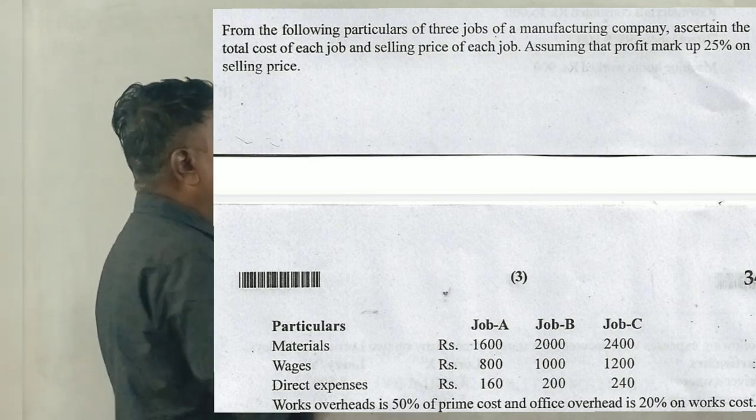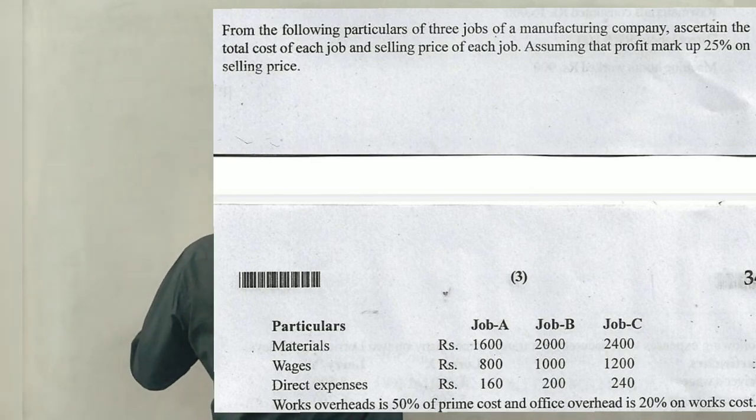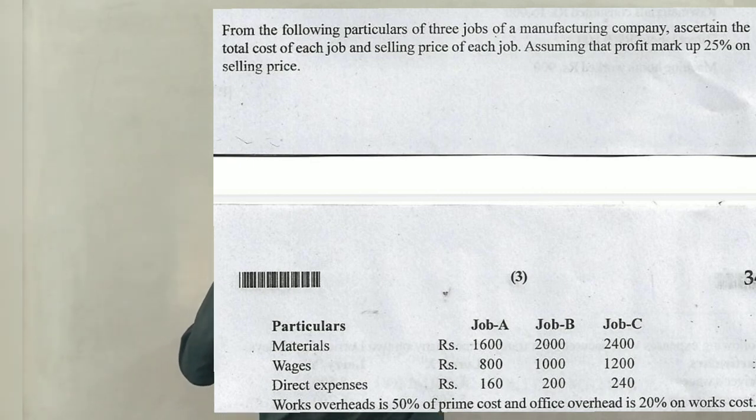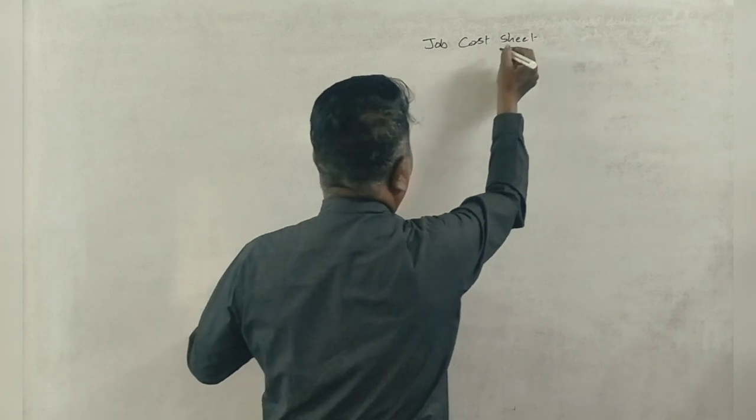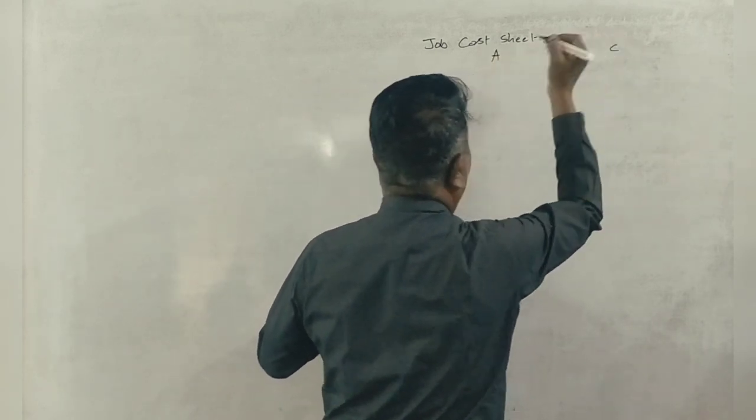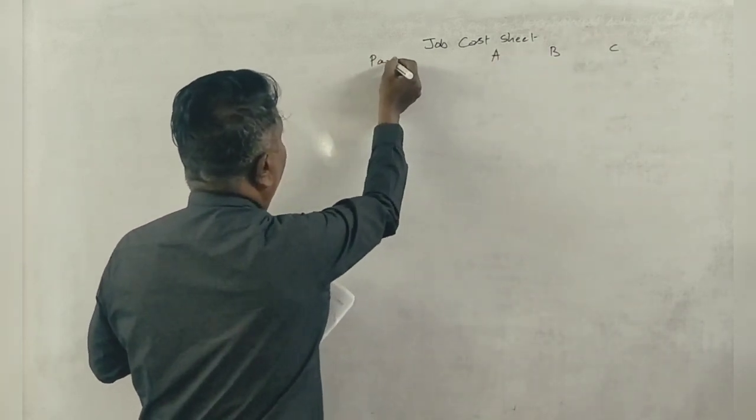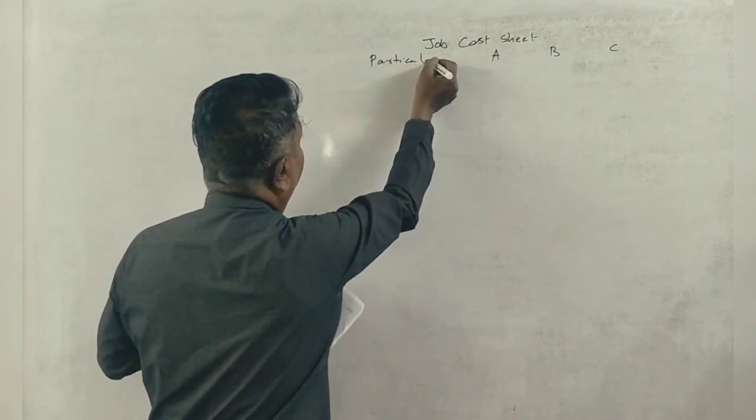Okay, so this is the first job cost sheet. What is the job cost sheet? Job A, B, and C. Particulars. Okay, now.